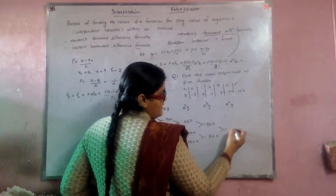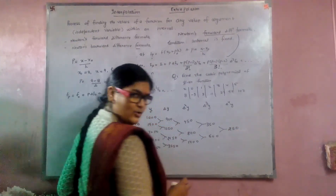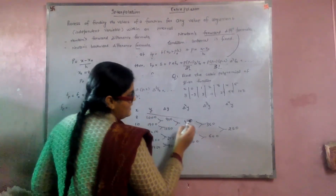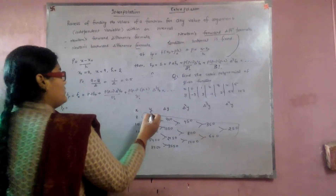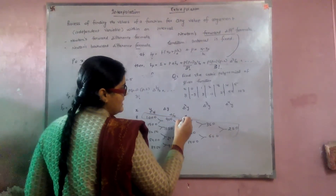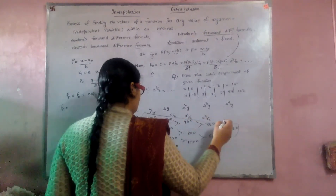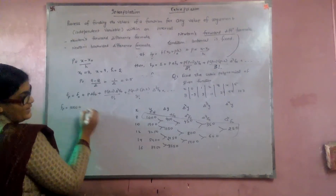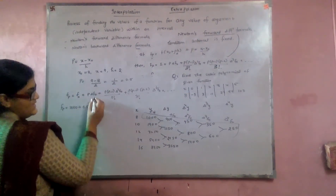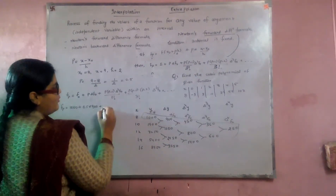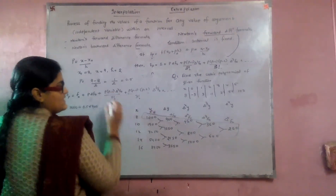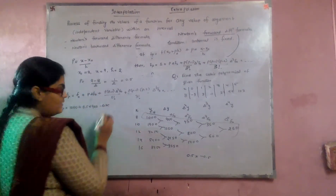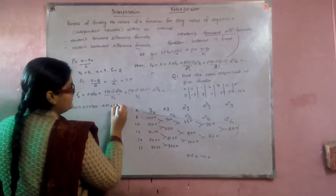Substituting all the values into Newton's forward formula: f naught = 1000, Δf naught = 900, Δ²f naught = 450, Δ³f naught = 350. So: f(0.5) = 1000 + 0.5 × 900 + (0.5)(0.5−1)/2 × 450 + (0.5)(0.5−1)(0.5−2)/6 × 350. This gives: 1000 + 450 + (0.5)(−0.5)/2 × 450 + (0.5)(−0.5)(−1.5)/6 × 350. Computing: (0.5)(−0.5) = −0.25, so the second correction term = −0.25/2 × 450 = −56.25.